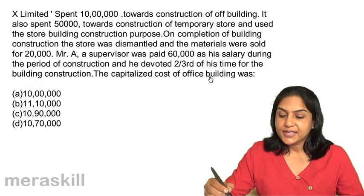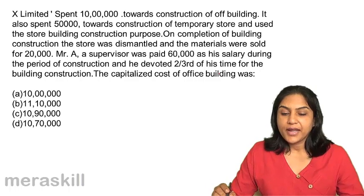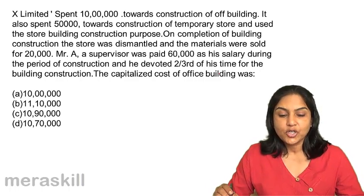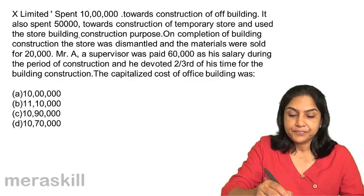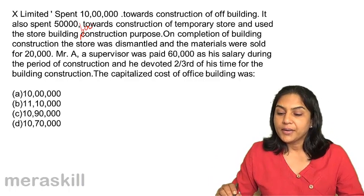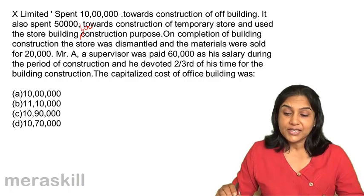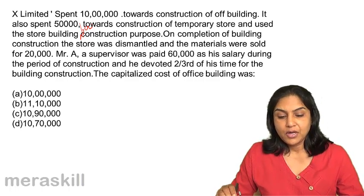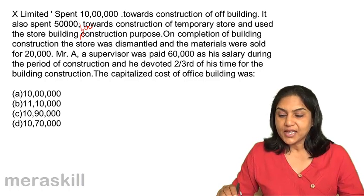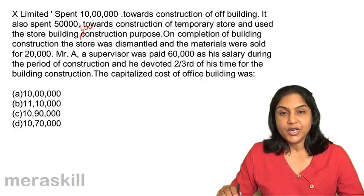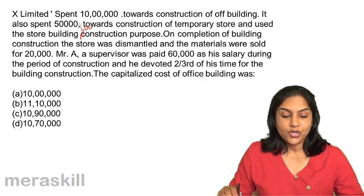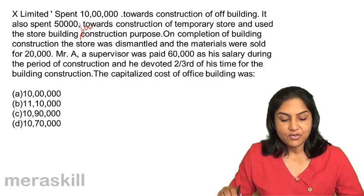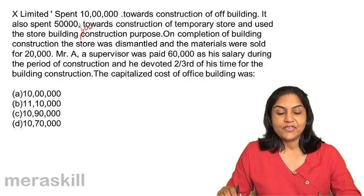Next. X Limited spent 10,000 towards construction of an office building. It also spent 50,000 towards construction of a temporary store used for construction purposes. On completion, the store was dismantled and the materials were sold for 20,000. Mr. A, a supervisor, was paid 60,000 as his salary during the period of construction and he devoted two-thirds of his time for the building construction. The capitalized cost of the office building was A: 10,000; B: 11,10,000; C: 10,90,000; or D: 10,70,000.